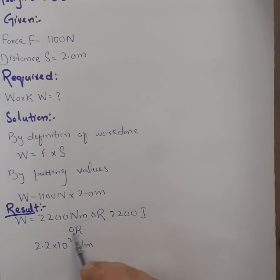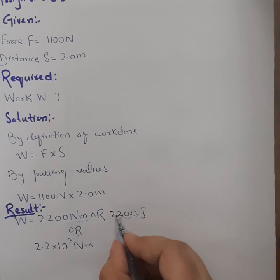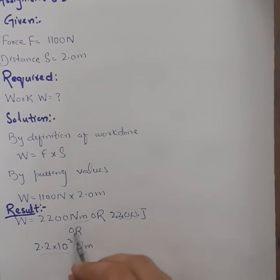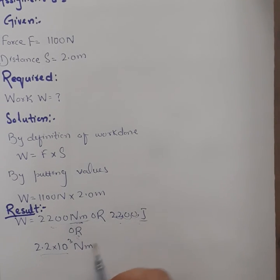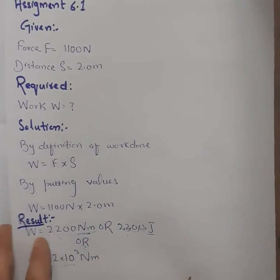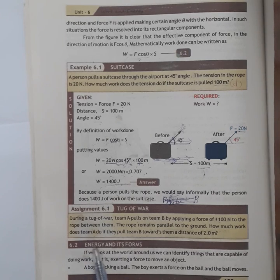If you want to write this in scientific notation: the decimal point moves 3 places, so it becomes 2.2 into 10 to the power 3 newton meter. You can write it in either unit — newton meter or joule. Thank you so much students. This was our last topic on work. In our next lecture we will cover topic 6.2: energy and its forms. Stay safe, stay home, goodbye.